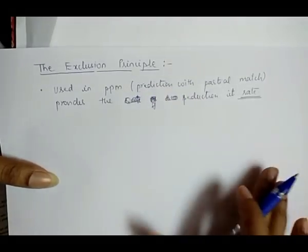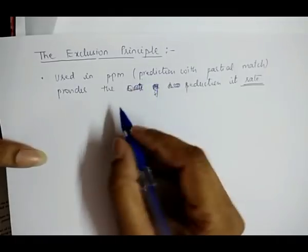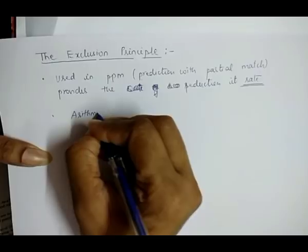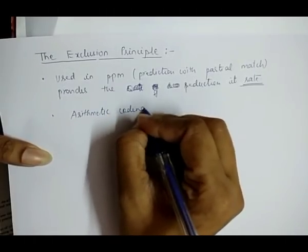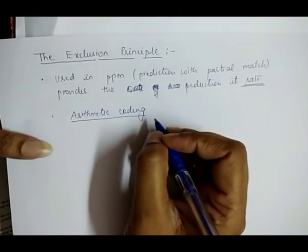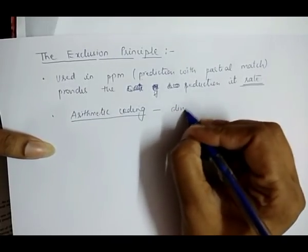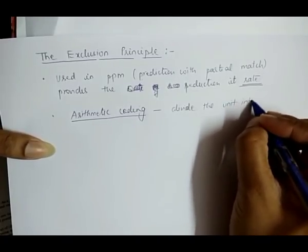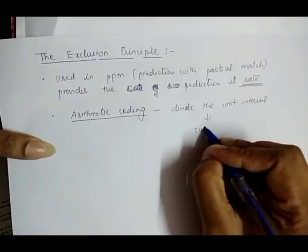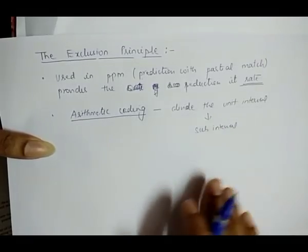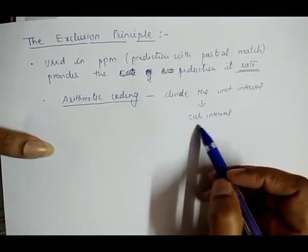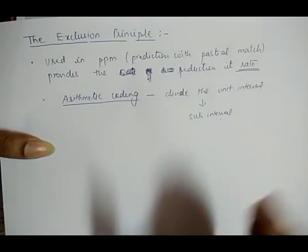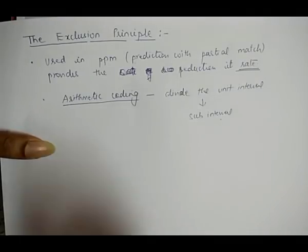The basic idea behind this principle connects to arithmetic coding. In arithmetic coding, we divide the unit interval, that is 0 to 1, into sub-intervals. Each of these sub-intervals represents a particular letter.